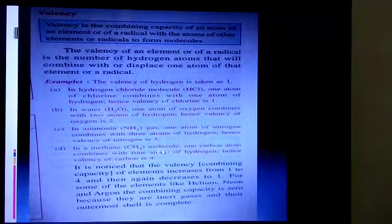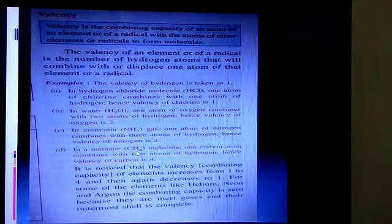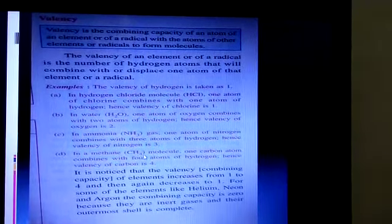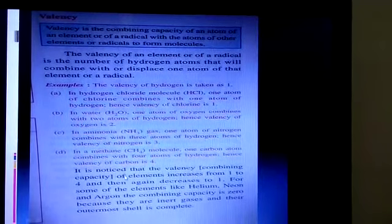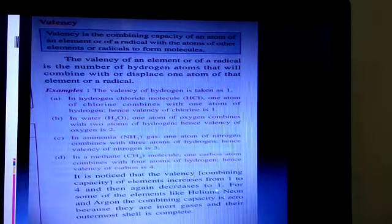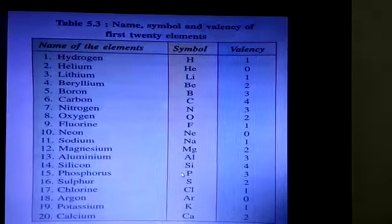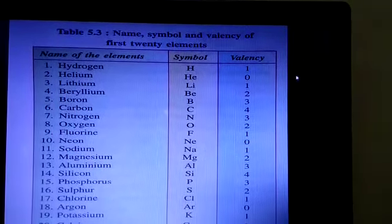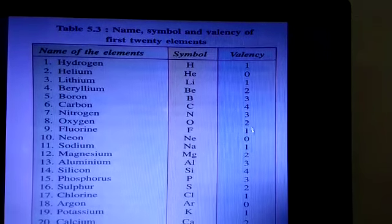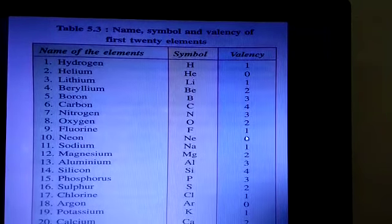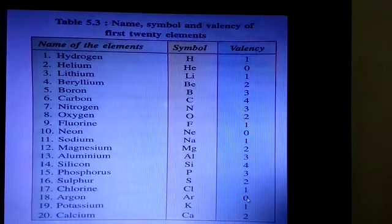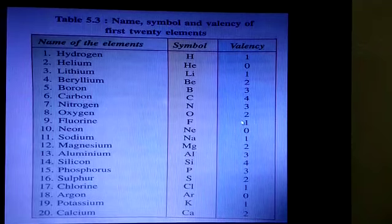It is noticed that the valency of elements increases from 1 to 4 and then again decreases to 1. You can see in the next table, the valency. Here, see students, valency increases 1 to 4 and then it starts decreasing to 1. And for inert gases like helium, neon, and argon, their valency is 0.